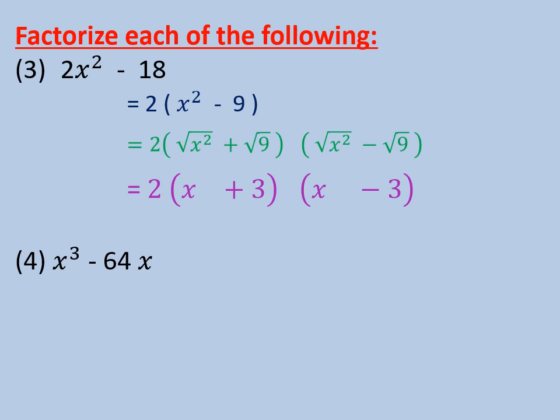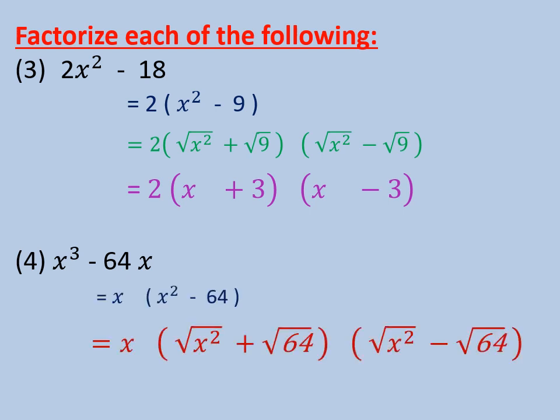We will take x as a common factor. Then the factorization will be x times (root of x² plus root of 64)(root of x² minus root of 64). So the final factorization will be x(x + 8)(x - 8).